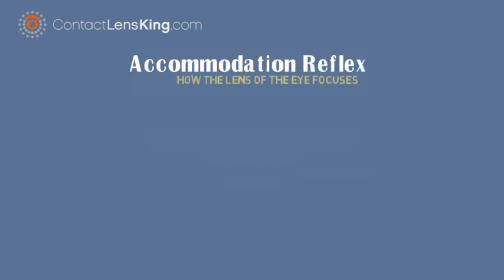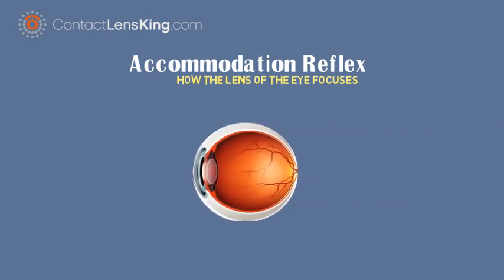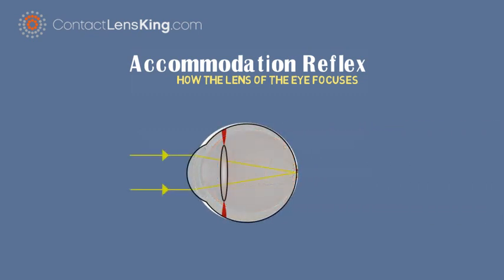ContactLensKing.com presents: Accommodation Reflex — How the lens of the eye focuses. Accommodation reflex is an action of the eye that occurs when it tries to focus from distant to near images. This reflex produces a change in the shape of the lens, allowing for various focal points.